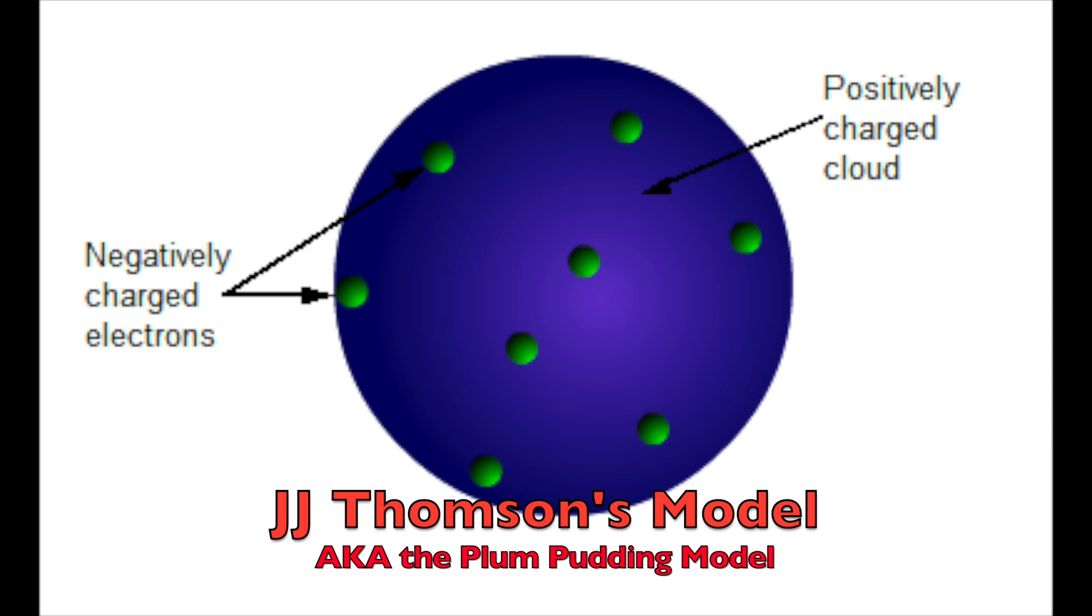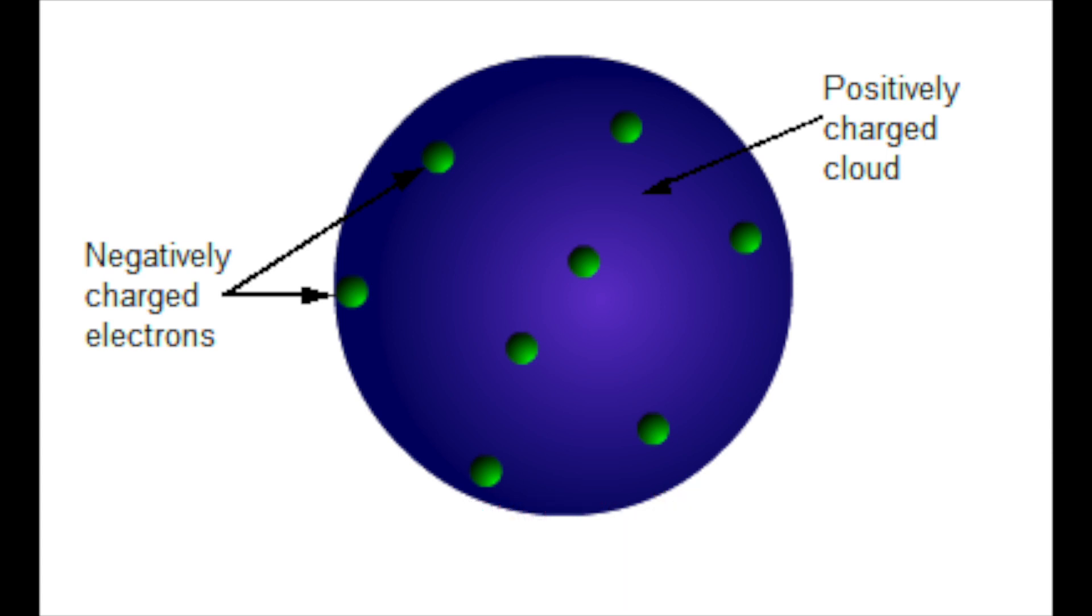Ninety years later, J.J. Thompson discovered the electron. When he discovered an electron, this was a piece smaller than an atom. He figured out that they had a negative charge, but an atom overall doesn't have charge, so he figured that there must be these little negative charges floating around inside of a big positive charge.